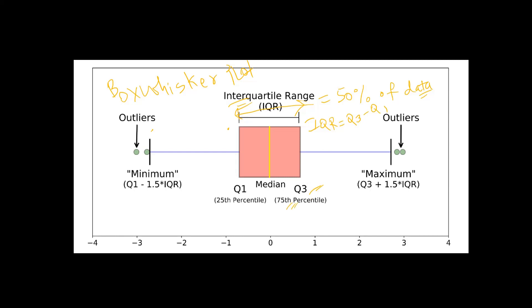Q3 is the 75th percentile and Q1 is the 25th percentile, so the 75th percentile minus the 25th percentile gives you the interquartile range. On the left and right you can see the whiskers, which are nothing but the minimum and maximum values. All values to the right of the upper fence are outliers, and all values to the left of the lower fence are also outliers. That is what we are going to see today.